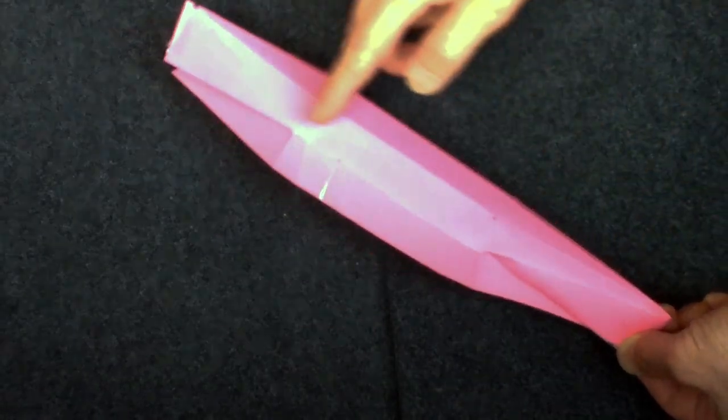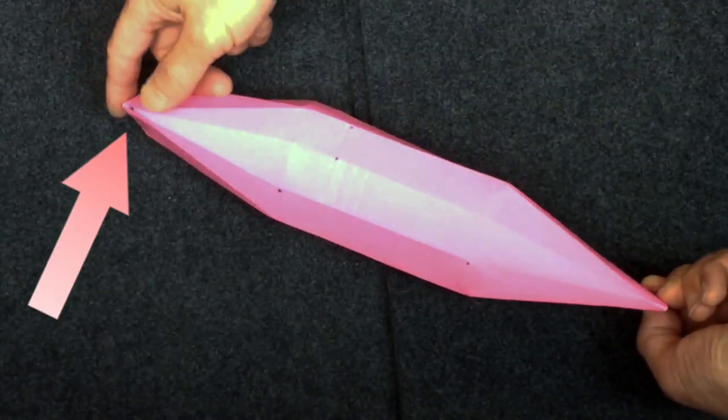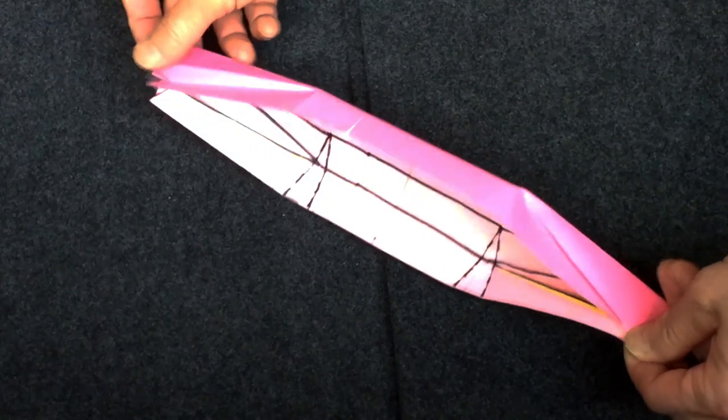Because of the way the boat is being folded together, it has fewer pointed corners. This reduces the chances that it will be damaged when in use.